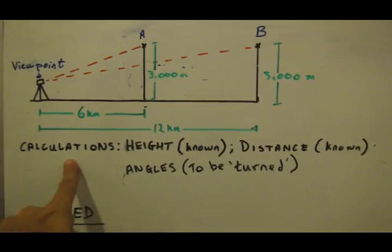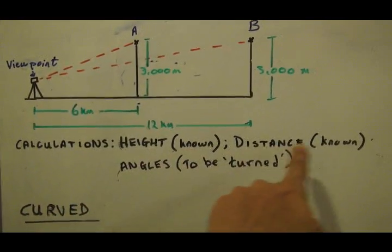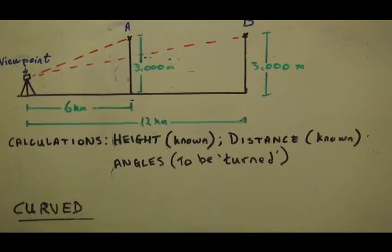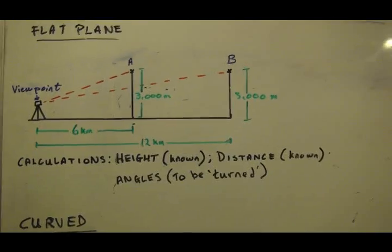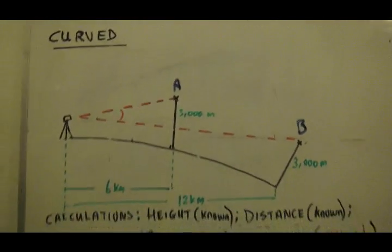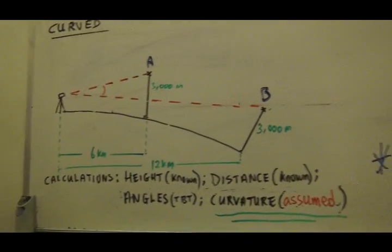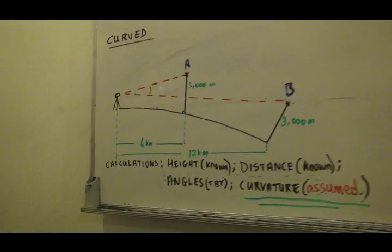The heights are known, the distances are known and the angles can be pretty much estimated from that. That kind of seems to make sense. In the calculations, we have height, which is known, the distance, which is known, the angles are to be turned, as they say in the trade, apparently.